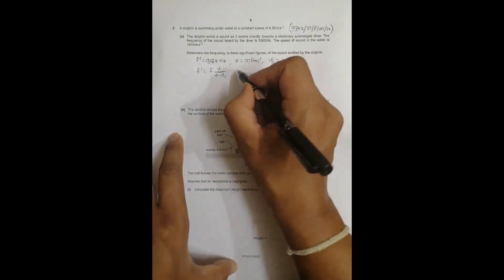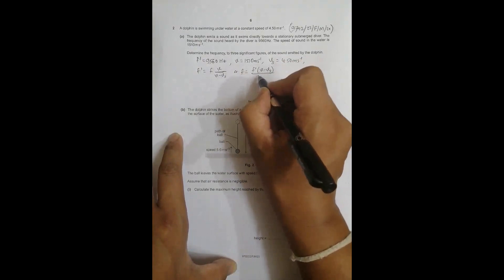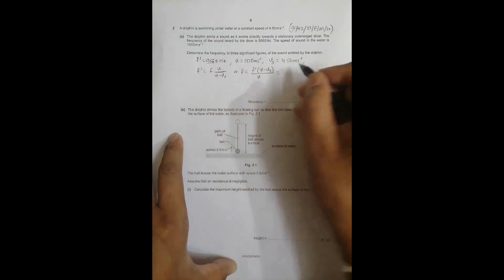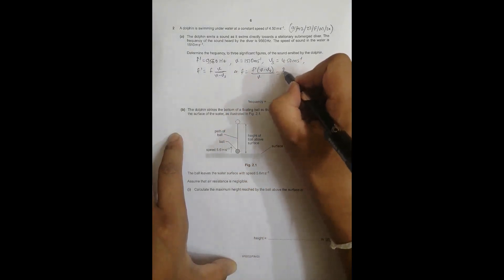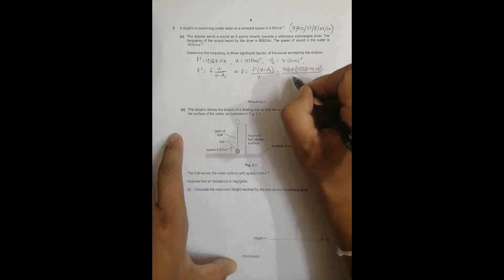This gives us F equals F prime times (V minus Vs) divided by V, which equals 9560 times (1510 minus 4.50) divided by 1510.